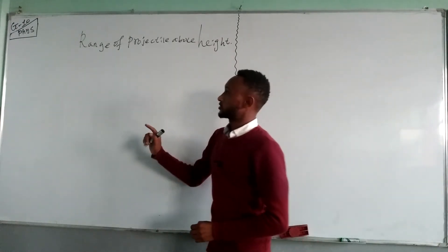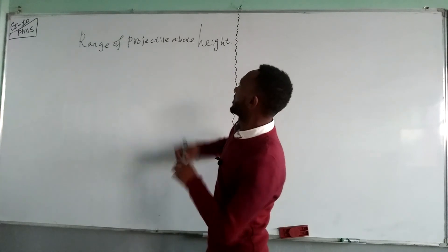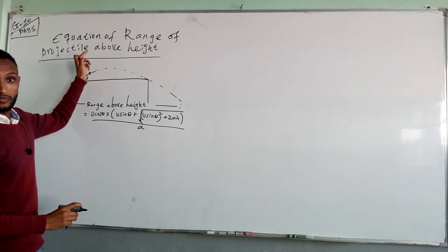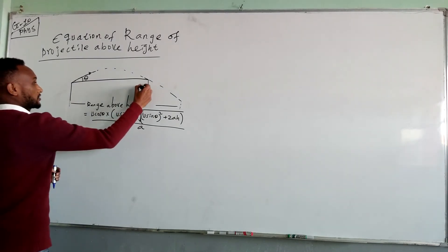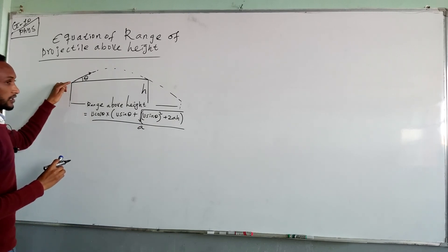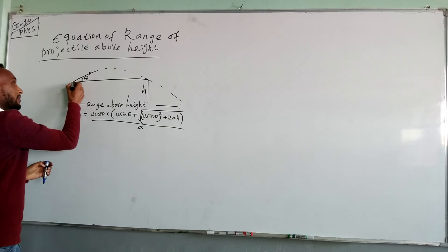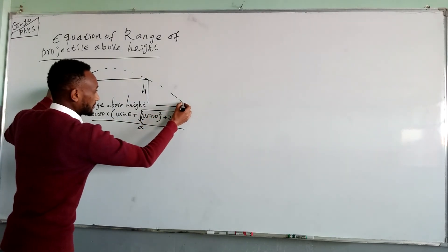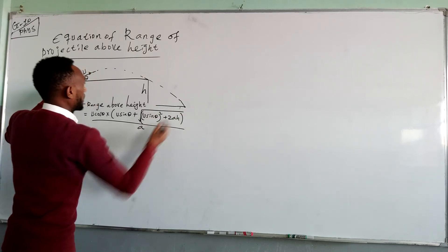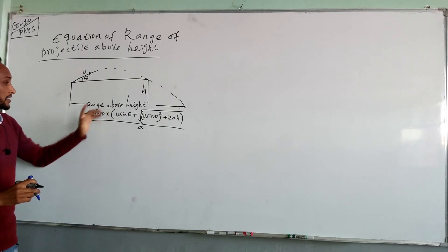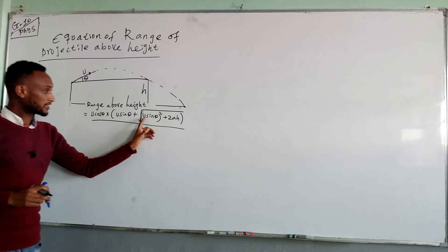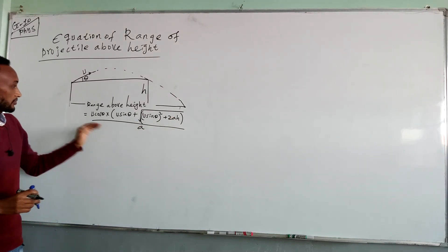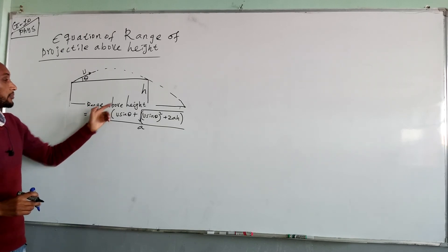Today on this video we see that the projectile range which can be above some height. This is the equation of a range above height, or the range of projectiles above some height. This is the height at which the projectile lands. Initially the body is projected with initial velocity at an angle of projection theta, and finally it lands at a point. The range above some height is given by u cos θ times (u sin θ plus the radical of u sin θ squared plus 2ah) over a.